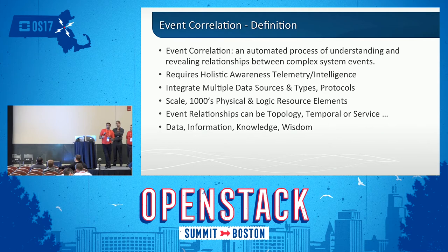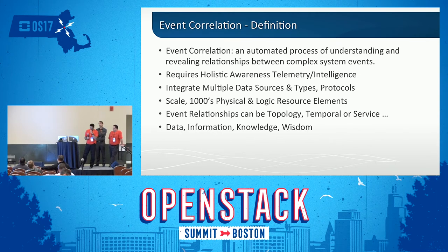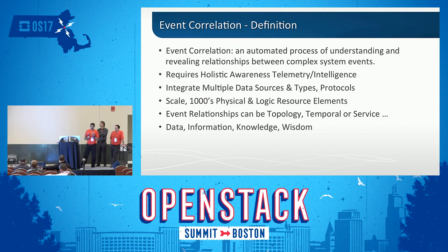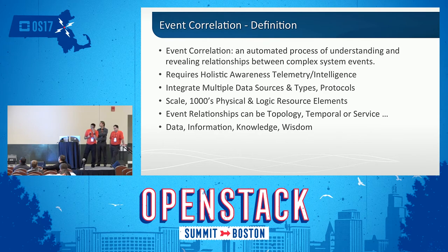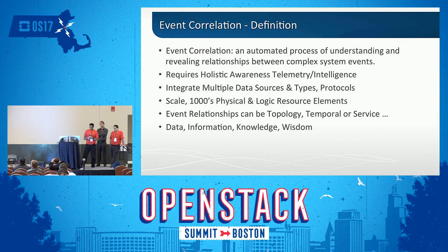Correlation also requires multiple data types, multiple protocols, and multiple interfaces from devices we're receiving data from. In a large enterprise, service provider, or carrier, you're going to have a very large system — it could be thousands and thousands of resource elements. Correlation is going to support us in identifying relationships that are usually topological, temporal time-based, and service-based. With the data we glean from the network, it turns into information, and that information allows us to manage our systems and our network better — and of course, this will turn into knowledge.